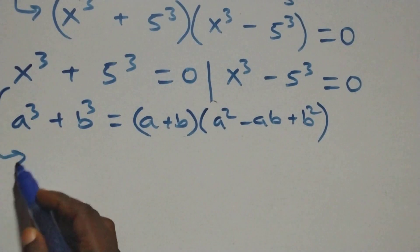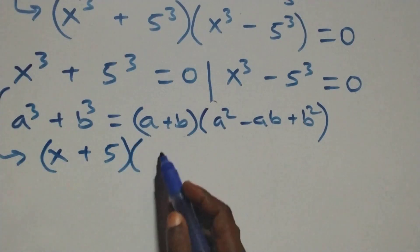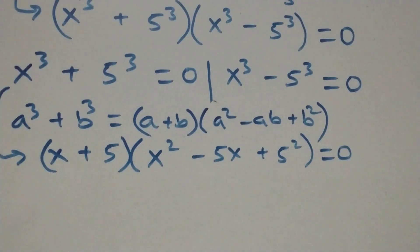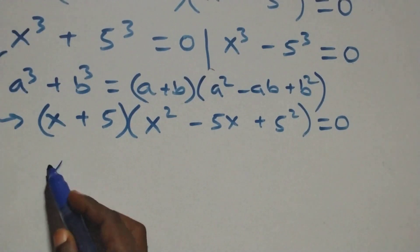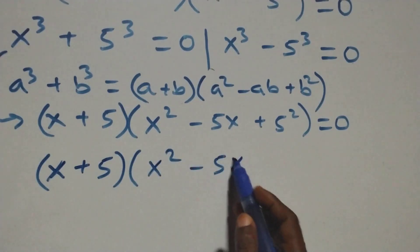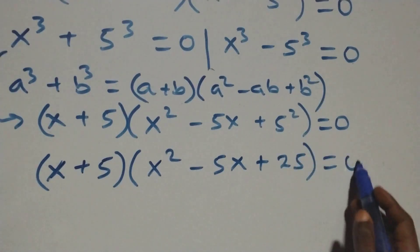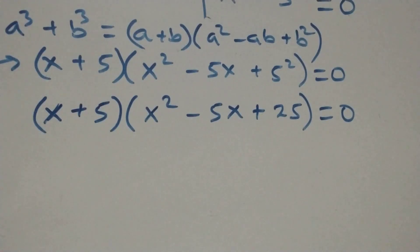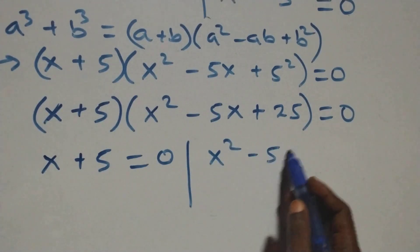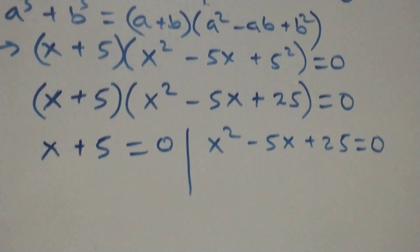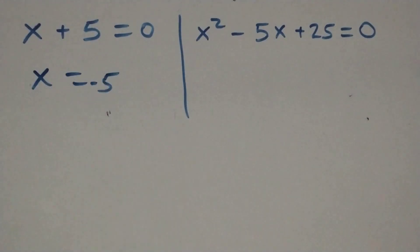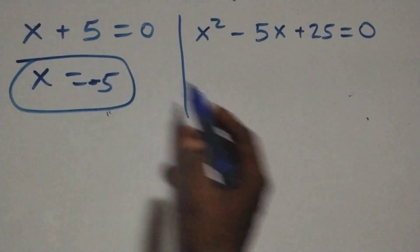This becomes x plus 5, times x squared minus 5x plus 5 squared, equals 0. That gives us two possible cases: x plus 5 equals 0, or x squared minus 5x plus 25 equals 0. Solving the first, we have x equals negative 5, which is a real solution.